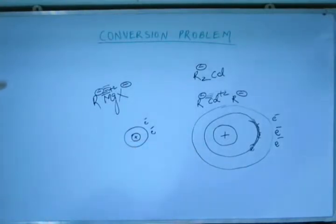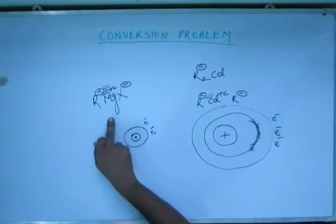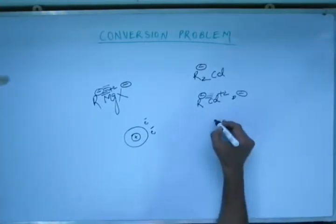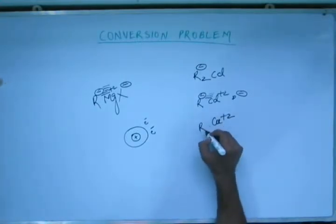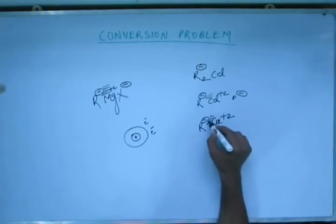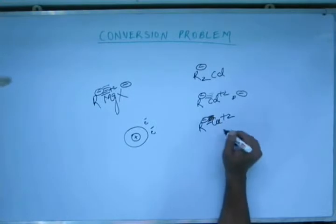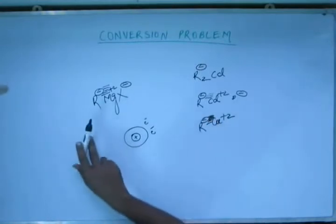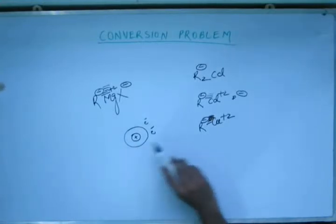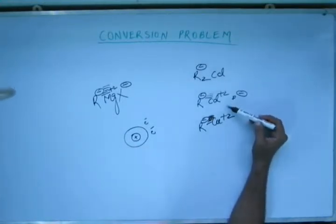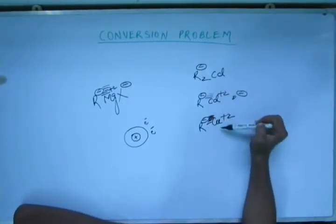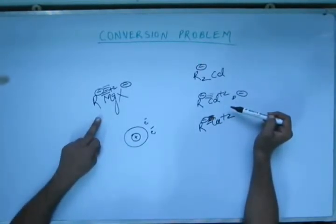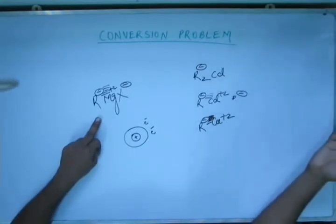The same reasoning applies if we replace magnesium with copper. Cu²⁺ ions attract R⁻ more strongly than Mg²⁺, just as Cd²⁺ does. So alkyl groups attached to divalent d-block metals like cadmium or copper are less reactive, while alkyl groups attached to divalent s-block metals like magnesium are more reactive. This is an important generalization to keep in mind throughout the syllabus.